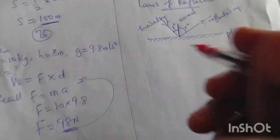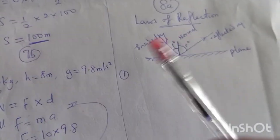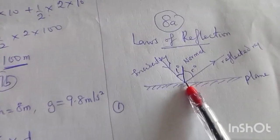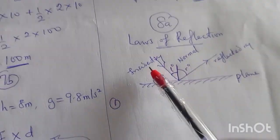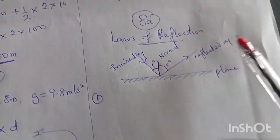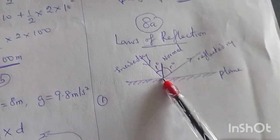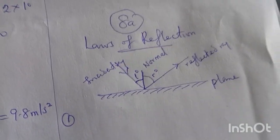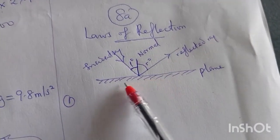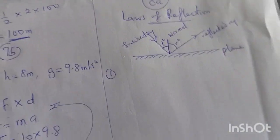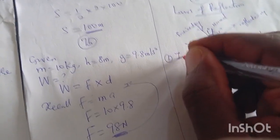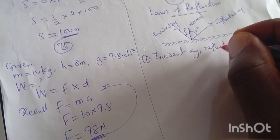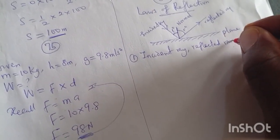Now I can state the laws. Looking at the diagram: the incident ray, the normal, and the reflected ray — where do they all meet? They all meet on the same plane. That is the first law: the incident ray, the normal, and the reflected ray all lie on the same plane. Let me write that down: incident ray, reflected ray, and normal all lie on the same plane.